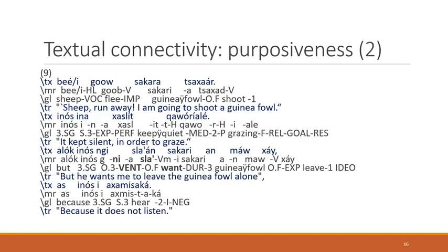Another example of purpose is in example nine, but of a different kind — we see it already in the lexical verb the hither patterns with. The hither here patterns with the verb 'want,' which in and of itself is a marker of intention. If we have such an analysis, it would of course be most beautiful if we could analyze all instances in these terms. But unfortunately, that is not the case — as I already mentioned, there are six cases that we cannot analyze in this way.